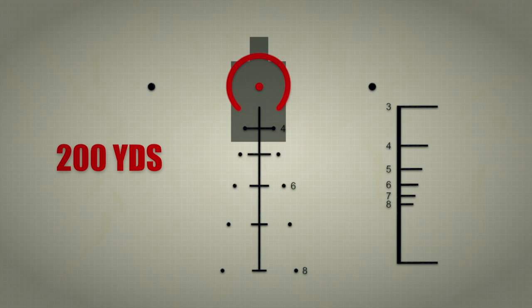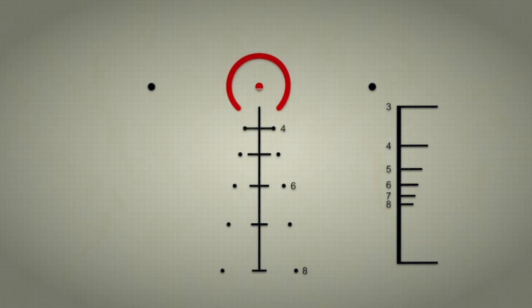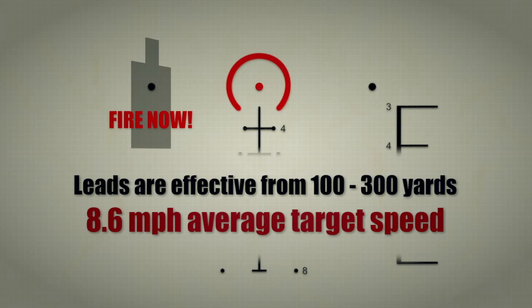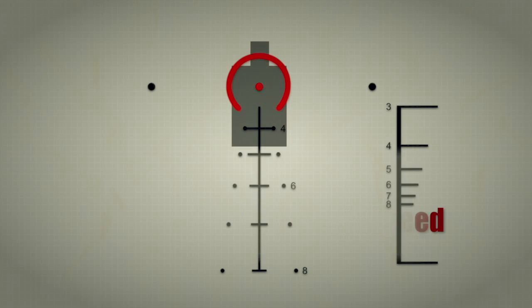For 200 yards the target would fit in the center of the big circle and you'd aim using the bottom of the dot. If the target is moving you can also use the leads set for a 90 degree angle at 8.6 average target speed.